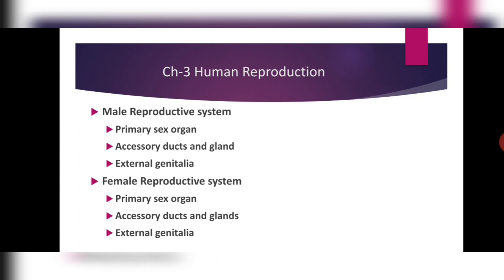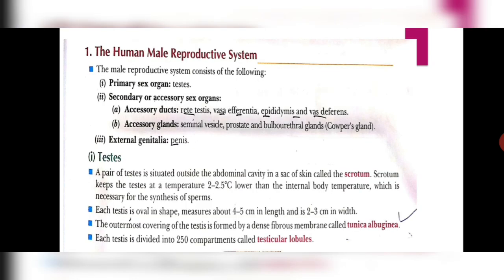Today we will be discussing chapter 3, Human Reproduction, where we will be dealing with the male reproductive and the female reproductive system. In both systems, we shall discuss the primary sex organ, the accessory ducts and the glands, and we will talk about the external genitalia. The primary sex organ in the human male is the testis, and the secondary sex organs are the accessory ducts and the accessory glands.